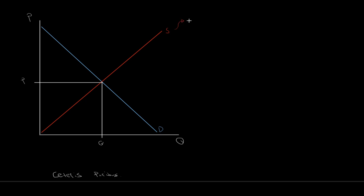Starting with the supply curve, one major determinant is the price of inputs — the price of raw resources and raw materials needed to produce the good. For example, in the market for trucks, if workers go on strike and ask for higher wages, that's an increased cost of production. Higher input costs mean it becomes difficult to continue producing the same amount at the same price, so as the cost of inputs changes, so does the ability to produce.